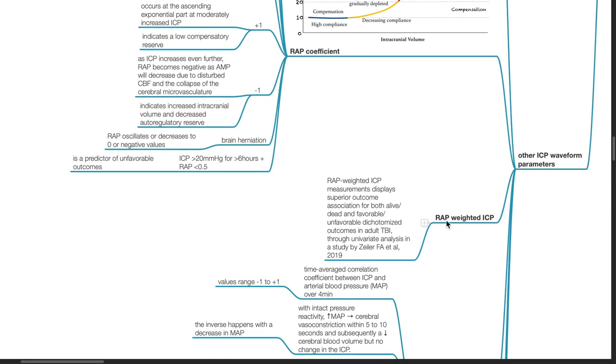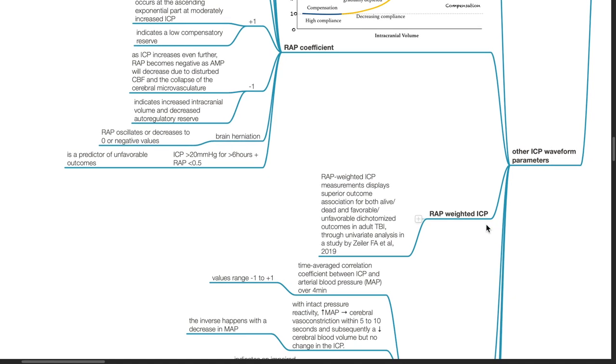RAP-weighted ICP. RAP-weighted ICP measurements display superior outcome association for both alive or dead and favorable or unfavorable dichotomized outcomes in adult traumatic brain injury cases through univariate analysis in the study done by Zeiler F.A. et al. in 2019.